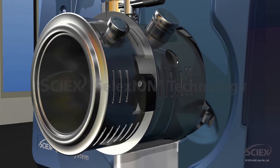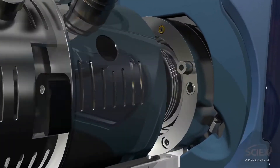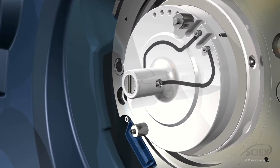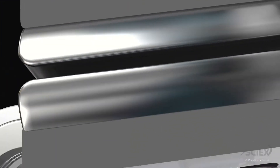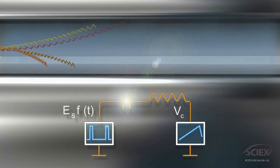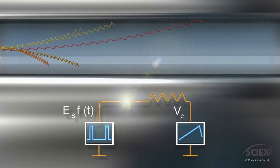The SI-X Selexion DMS mobility cell consists of two parallel flat plates that define a mobility region. Within the Selexion cell, a nitrogen carrier gas provides forward directional flow as a separation waveform comprising alternating periods of high and low electric fields of opposite polarity, producing a net radial migration of ions depending on the low and high field mobility.